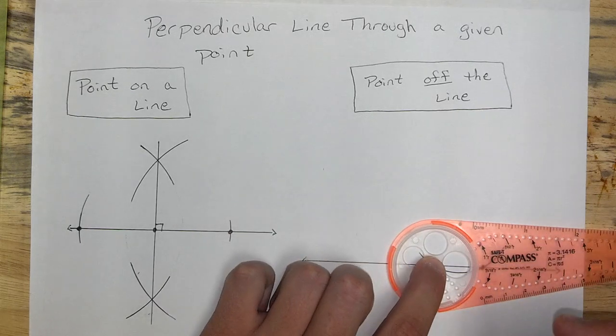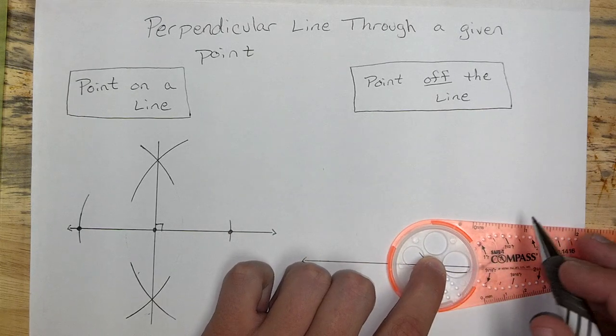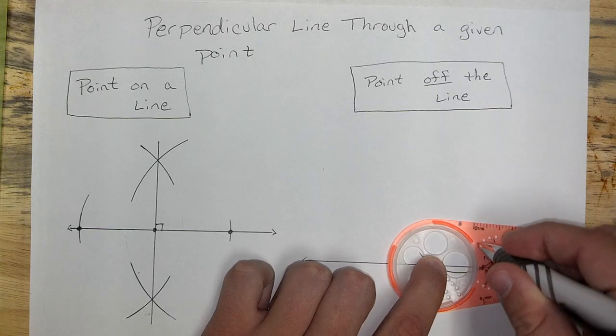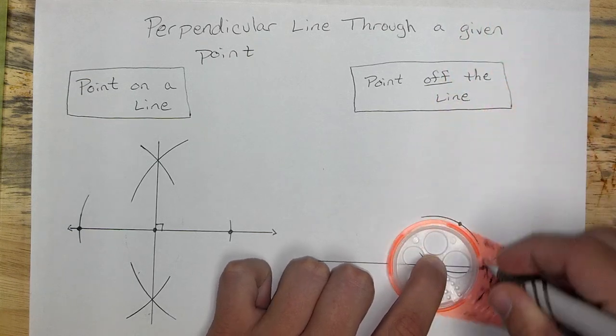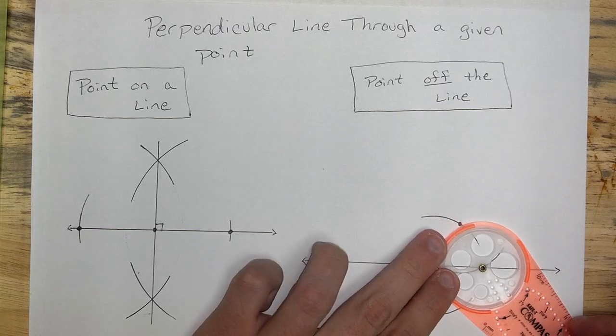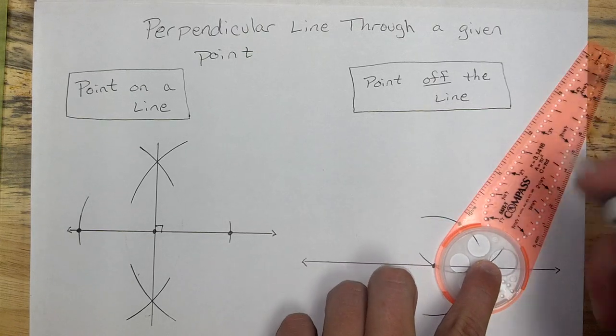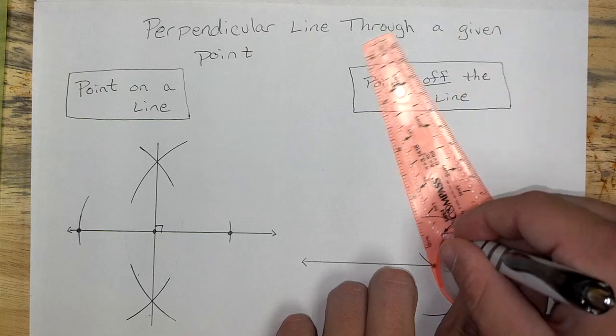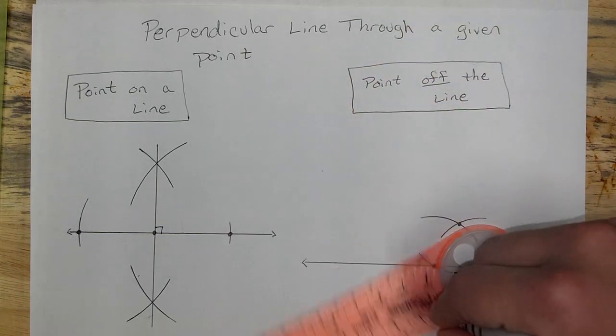Again, bisector construction, go beyond halfway. Make a nice mark up above, mark down below. Remember which hole you used. Come to the other side, do the same thing. Mark above, mark down below.